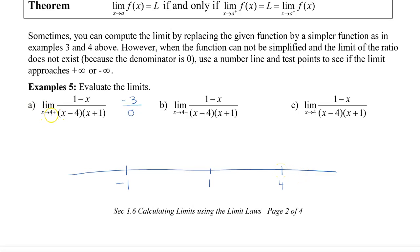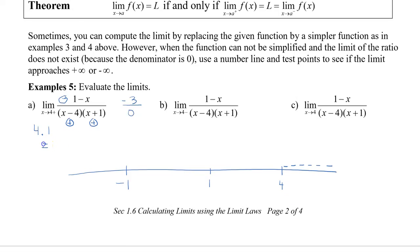For the first question — the limit from the right — we only need test points to the right of 4. Let's plug in 4.1. For the numerator factor (1 minus 4.1), that's negative. In the denominator, (4 minus 4.1) is negative — wait, that's actually a small positive in absolute terms — and (4.1 plus 1) is positive. With one negative and two positives, the whole fraction from the right side of 4 is always negative. So the right-hand limit goes to negative infinity.